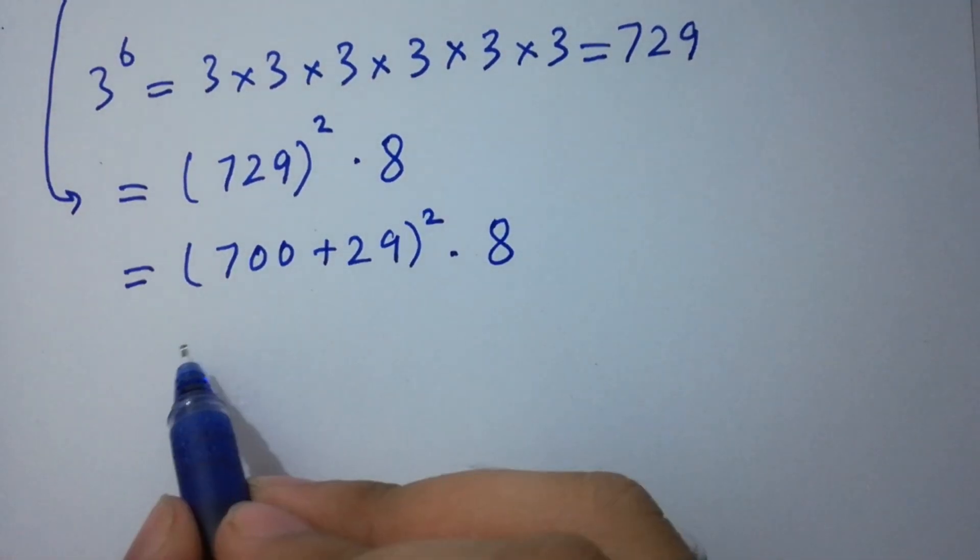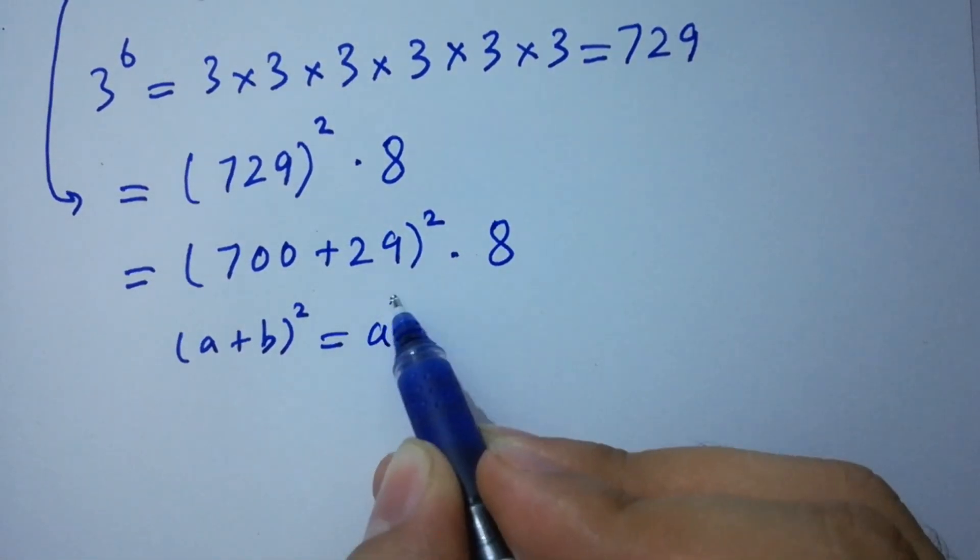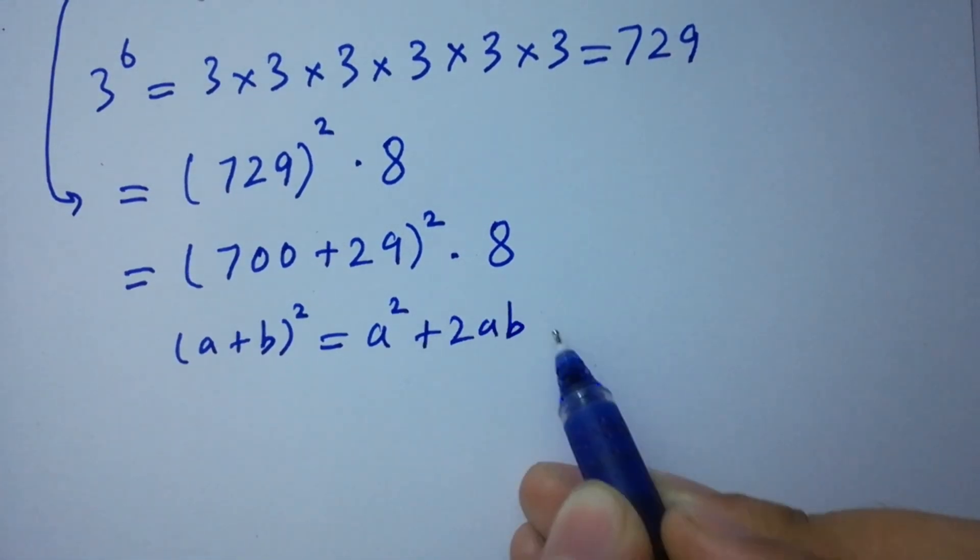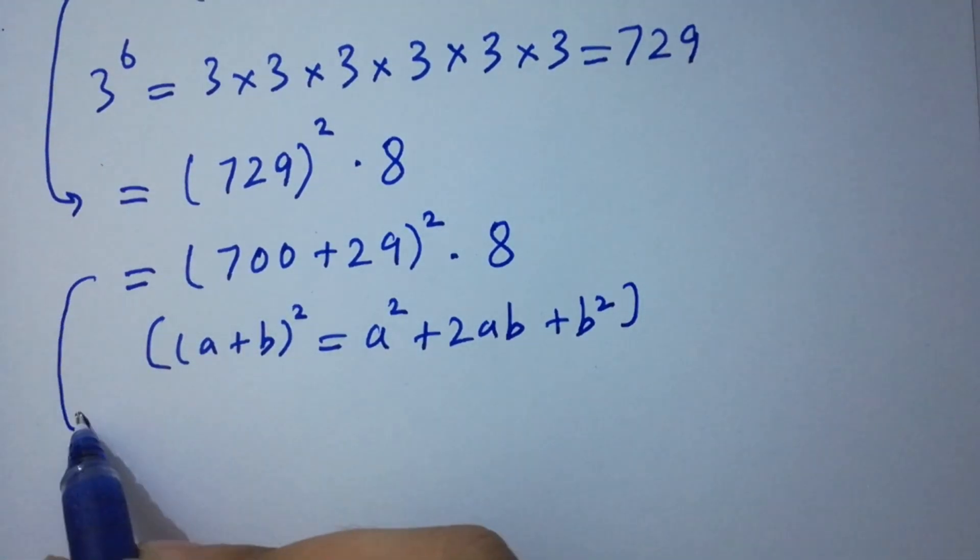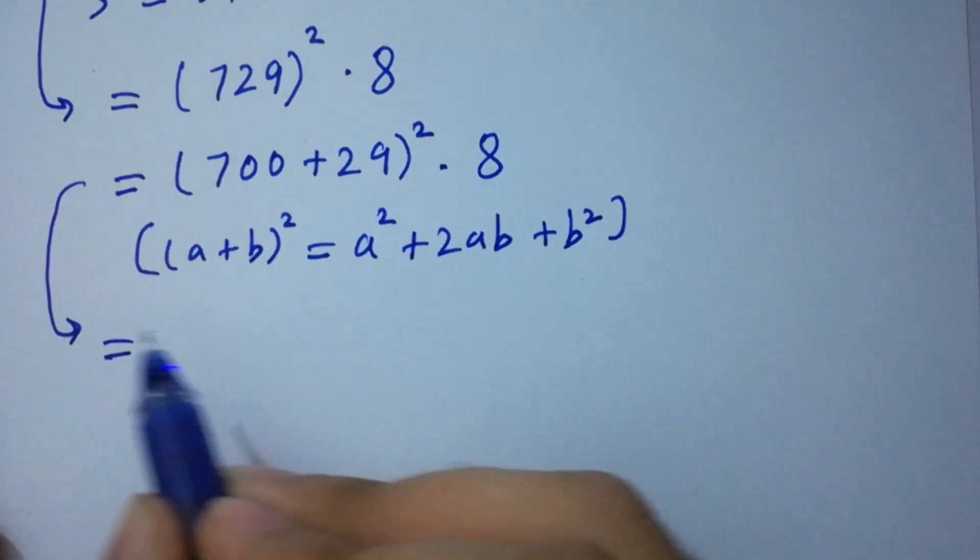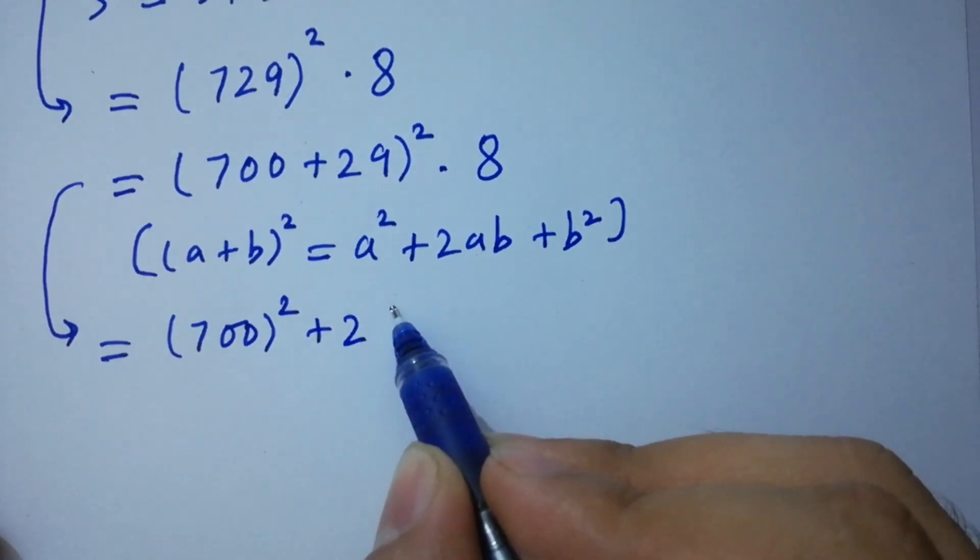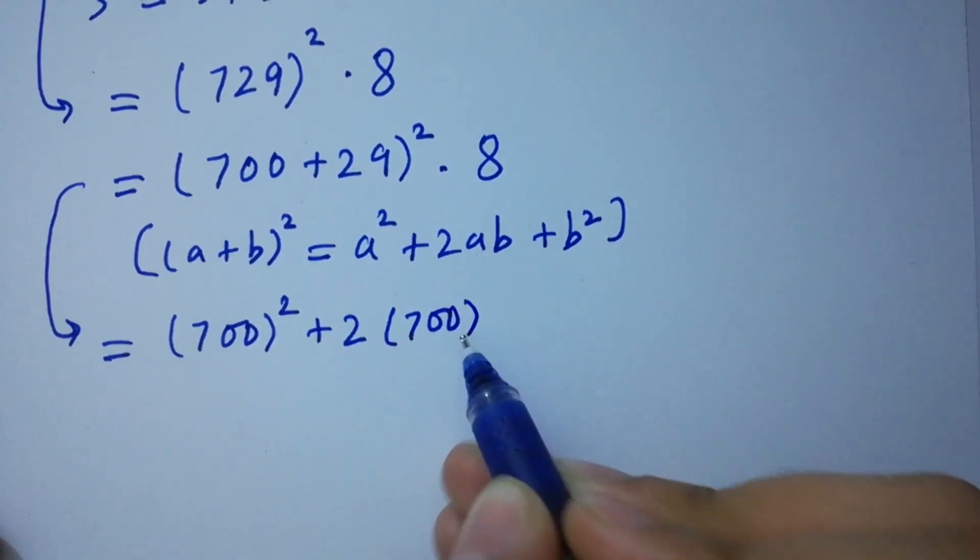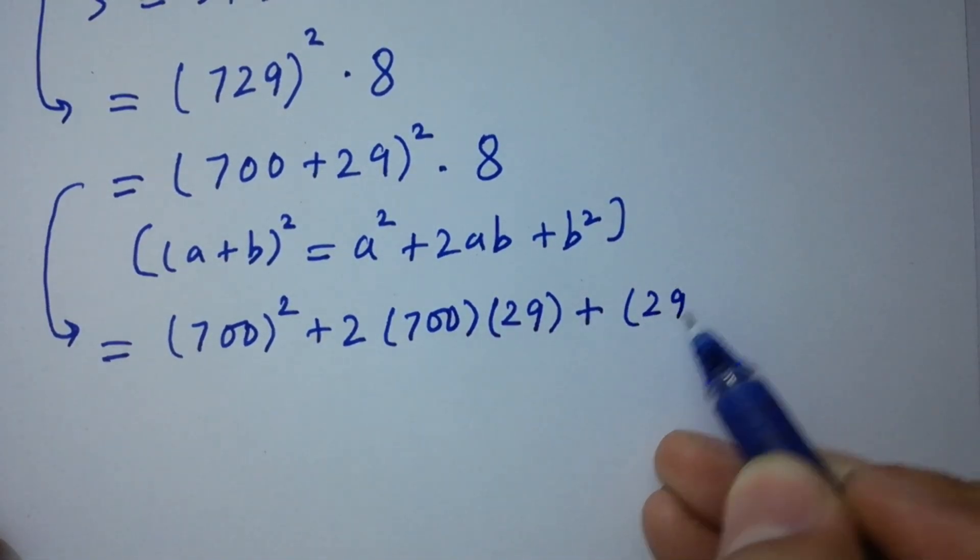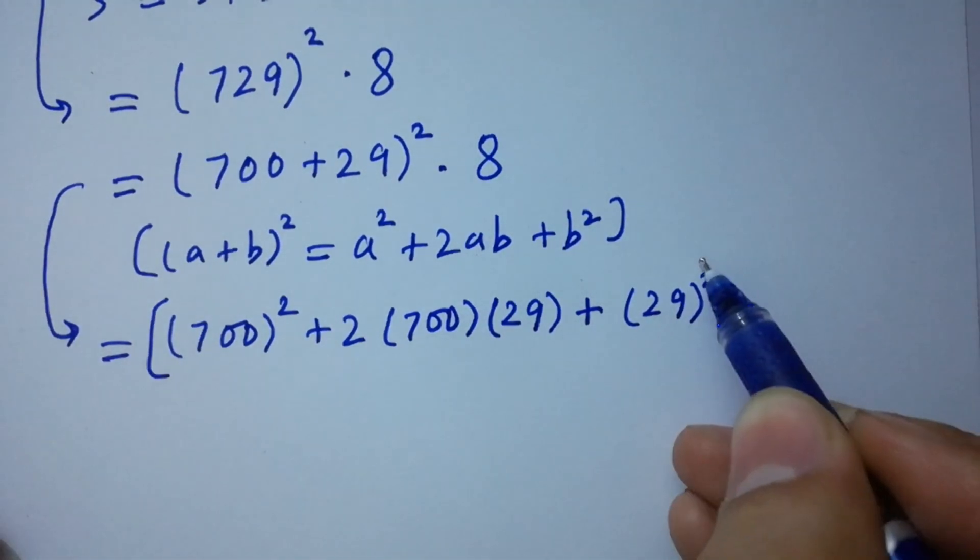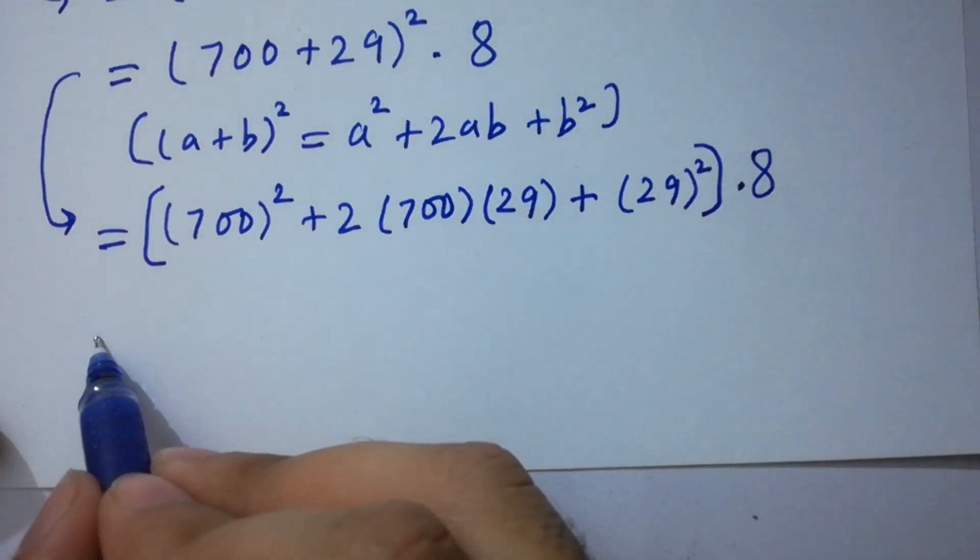We know the formula of a plus b whole square which is equal to a square plus 2ab plus b square. So we have 700 square plus 2 times 700 times 29 plus 29 square, times 8.